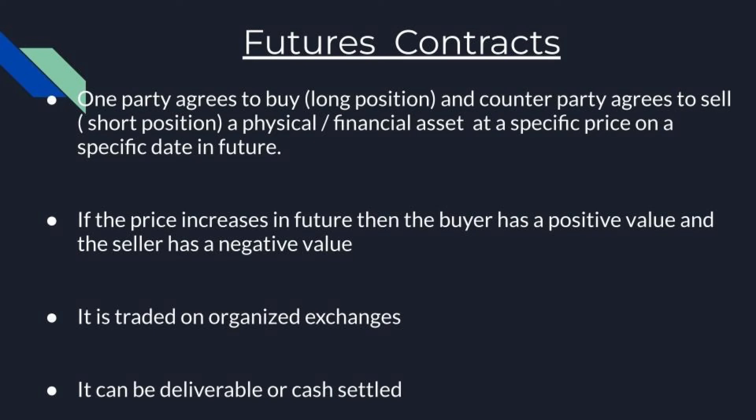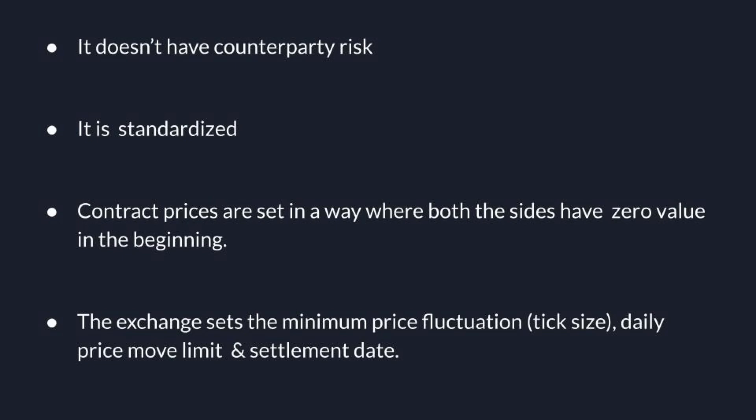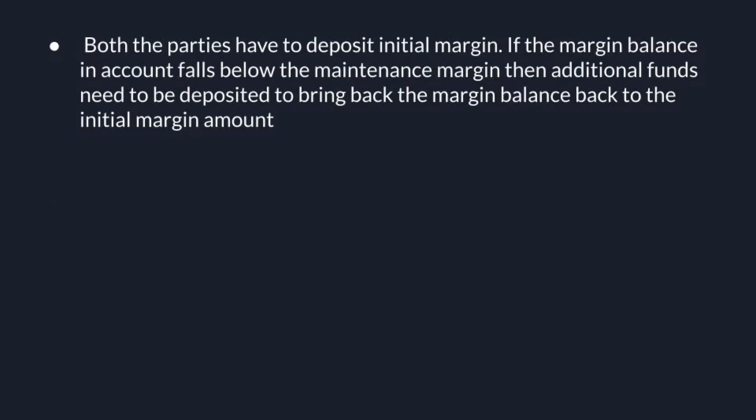Now let's understand futures contracts. A futures contract is very similar to a forward contract — it is essentially the same thing but with some key differences. The main difference is that futures contracts are traded on organized exchanges; in India we have NSE and BSE. There is no counterparty risk because the clearing house acts as a counterparty to each trade. If I take a long position in an XYZ futures contract, the clearing house takes the short position, and if someone wants to take a short position, the clearing house takes the long position.